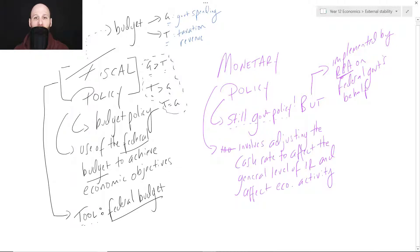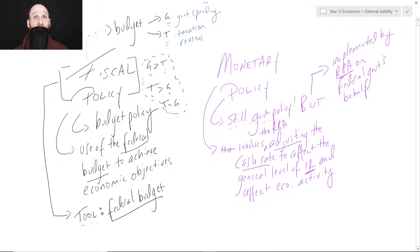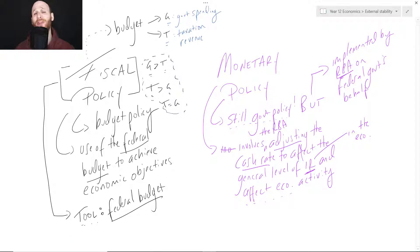Monetary policy involves adjusting the cash rate — moving the cash rate up and down. It involves the RBA adjusting the cash rate to affect the general level of interest rates in the economy, and therefore affect the level of economic activity. So the RBA changes the cash rate, the banks change the general level of interest rates, and the general level of economic activity changes as a result.